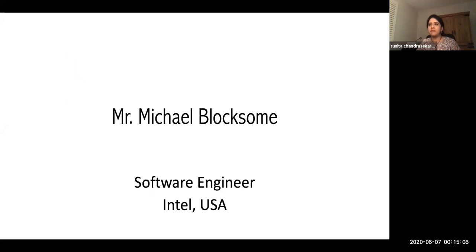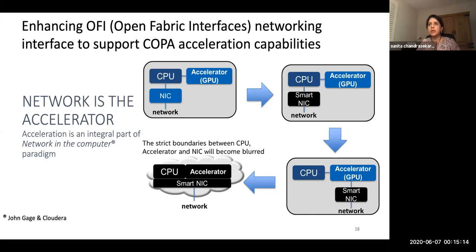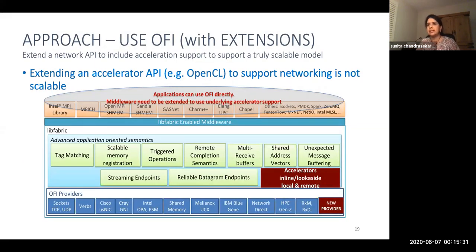Next, Michael Bloxson, a software engineer at Intel US, will talk about enhancing the Open Fabric Interface to support COPPA acceleration capabilities. COPPA stands for Configurable Network Protocol Accelerator. Given the trend towards tight integration of communication and computation, there is a dire need for a standard API to expose these capabilities to applications and middleware. He's going to talk about how the COPPA project adopted OFI and extended it to invoke COPPA acceleration capabilities.